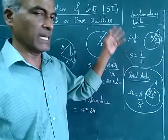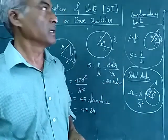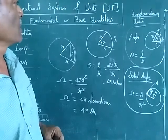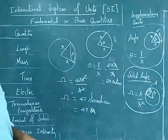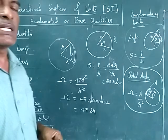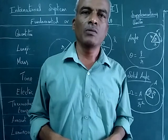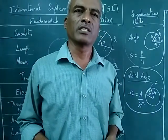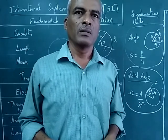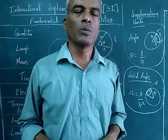For angle we consider a circle. For solid angle we consider a sphere. So that is all about fundamental or base quantities. And we have derived quantities. Those derived quantities we will see in the next topic. Hope you have understood this topic. Thanks for watching. Nanri.